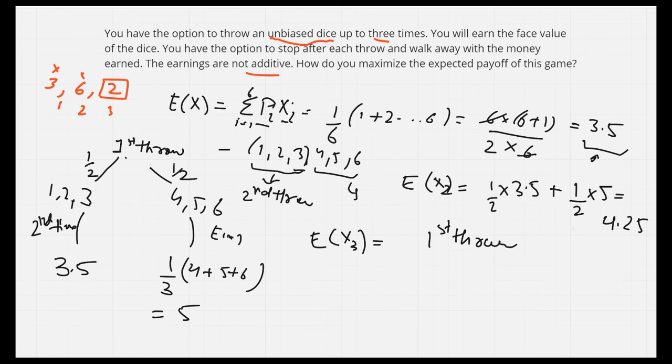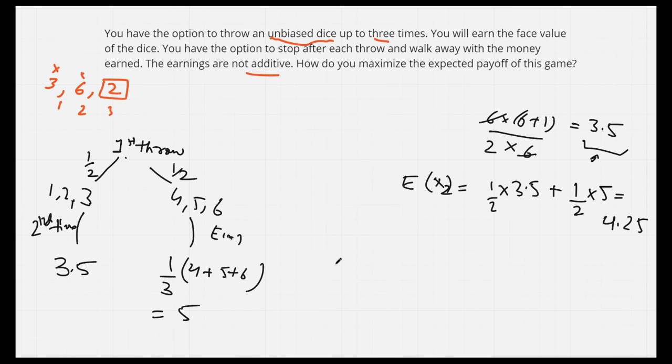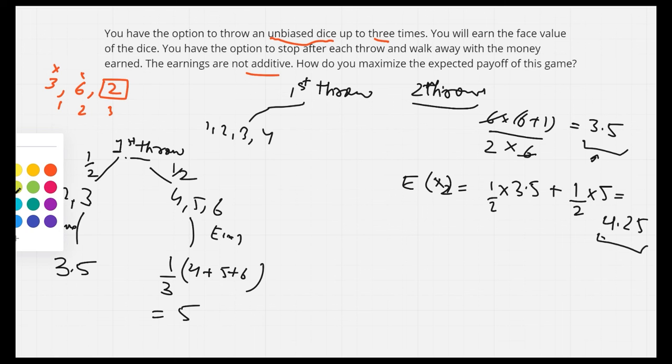We can decide in a similar fashion. In case of three dice, first throw, now two throws remain. We know what is the expected value in two throws: it's 4.25. So if I get a value less than this, I should not accept it and should go for two throws. Which are the values? 1, 2, 3, and 4.